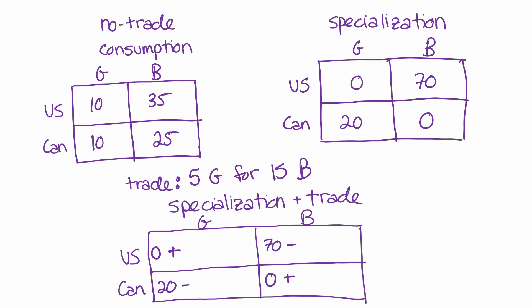So in this case, the US would be on the receiving end of the five guns, so we'd put a plus five here. Canada would be giving up the five guns, so we put a minus five here. Canada would be on the receiving end of the butter, so they'd be getting 15 butter. The US is on the giving side of the butter, so we subtract 15 here. And our resulting numbers are then 5, 55, 15, and 15.